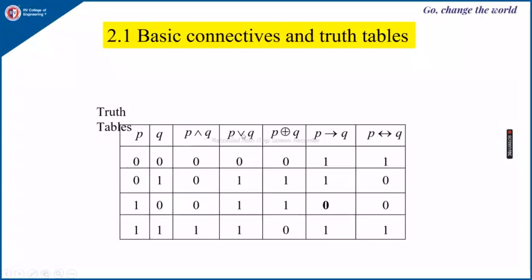Next, P OR Q. For P OR Q to be true, either P or Q or both can be true. Then P OR Q will be false only when both P and Q are false.